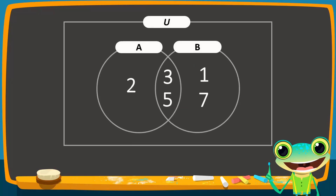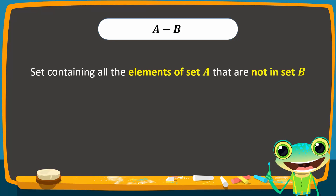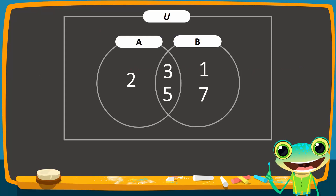How do we represent A difference B? Recall that A difference B is the set that contains all the elements of set A that are not in set B. In other words, A difference B contains elements that are only in set A. This corresponds to this region, which contains the element 2.